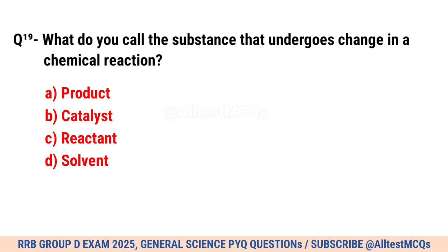Question No. 19. What do you call the substance that undergoes change in a chemical reaction? Correct option is C. Reactant.